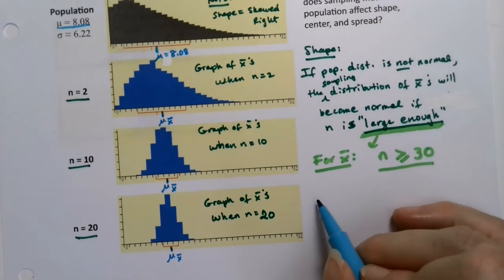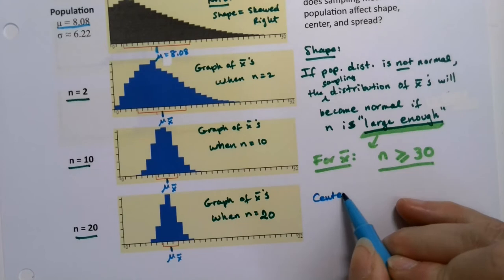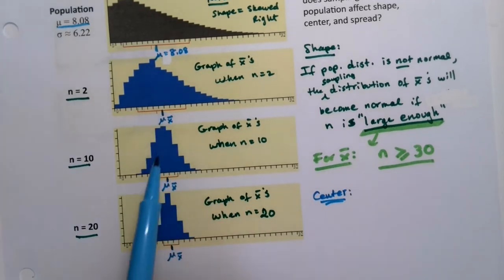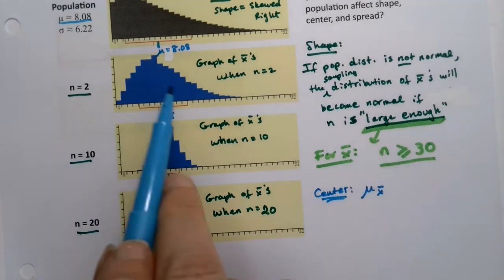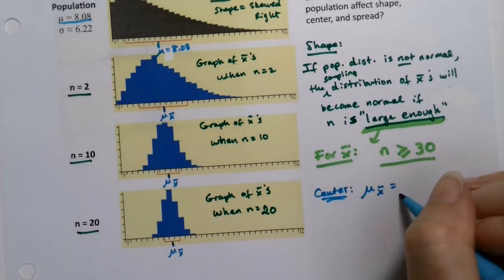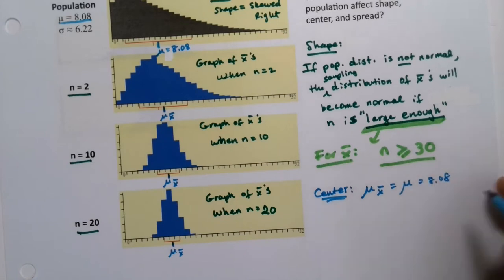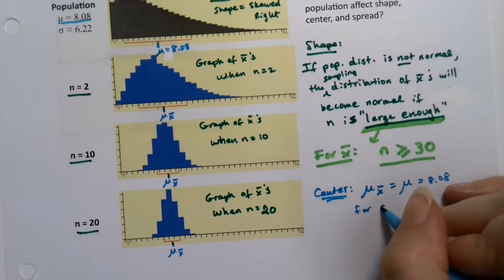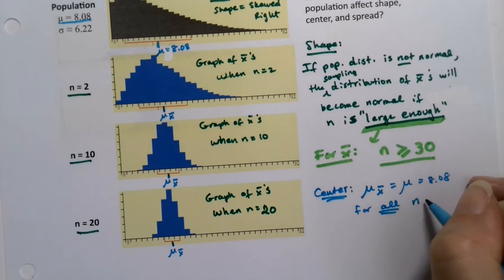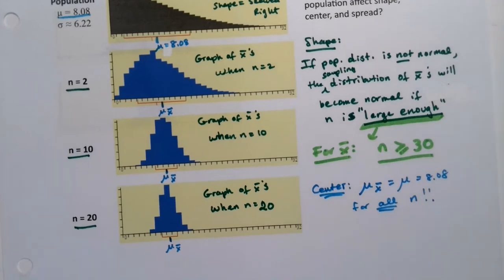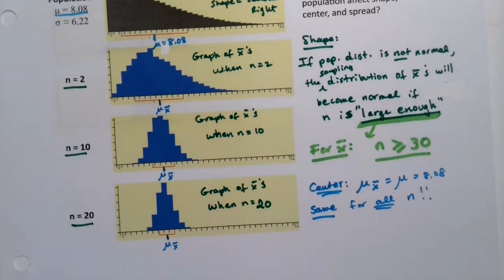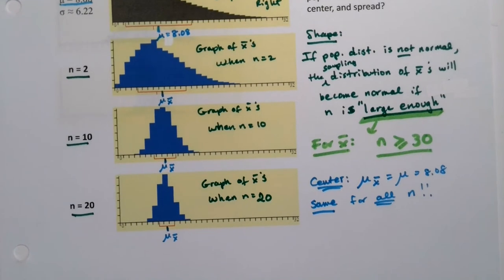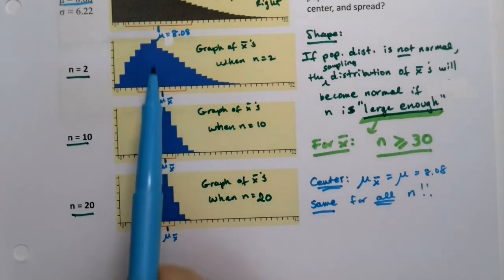Now, what about the center? The center is actually the easiest part. The mean of the X-bars — the mean of these sampling distributions — is equal to mu, which was 8.08 for all n, regardless of how large or small n was. The center is the same for all n. Every single distribution has the same center at 8.08, and you can see it because the lines are vertically aligned.